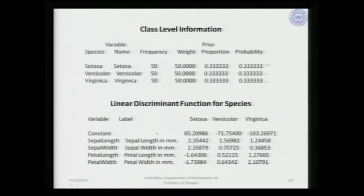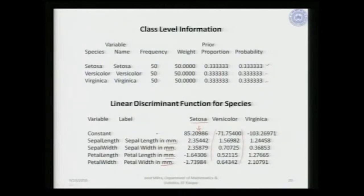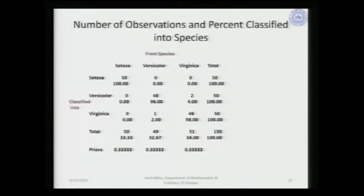These are the parameters corresponding to this species and the respective variables. The levels are measured in millimeter units. These are the linearly combining parameters with a constant term. For pi 1, pi 2 and pi 3 populations, we have the coefficient vectors corresponding to each respective population, and based on these we will base our classification.